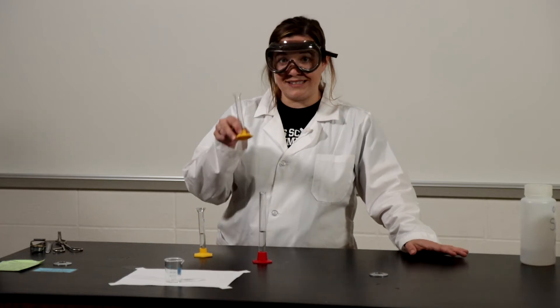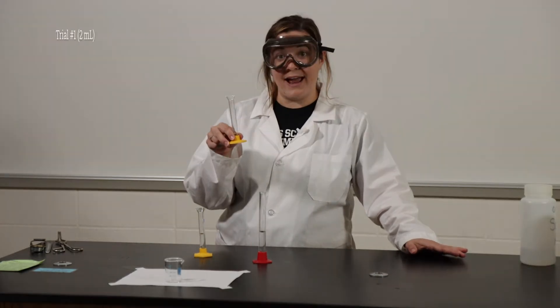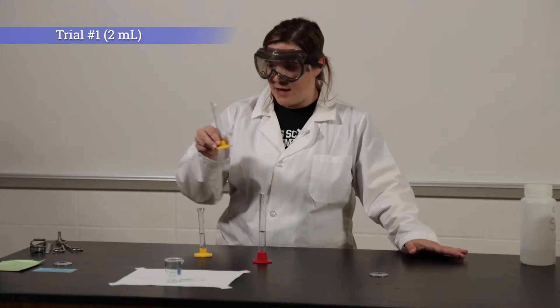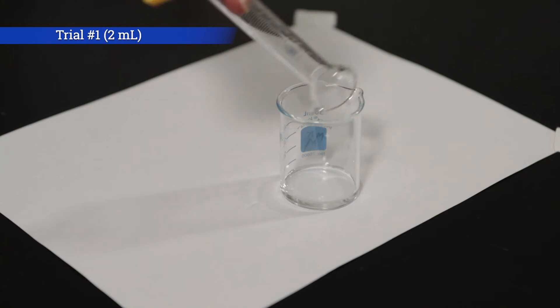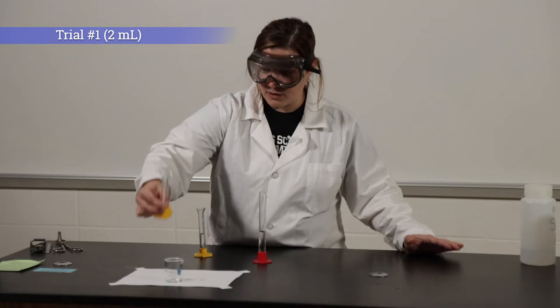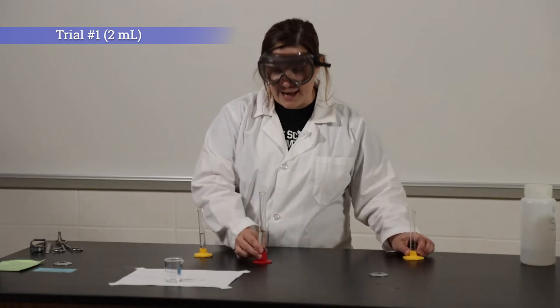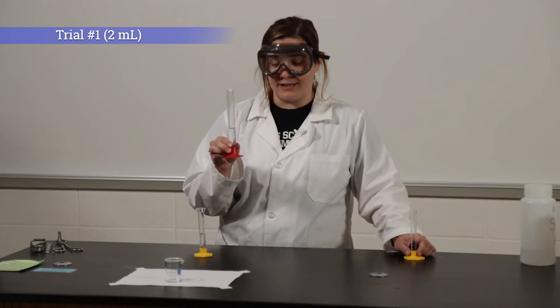So in this graduated cylinder for trial number one I have two milliliters of potassium iodate and I'm going to add that to my beaker. To dilute it I'm going to add 14 milliliters of water.